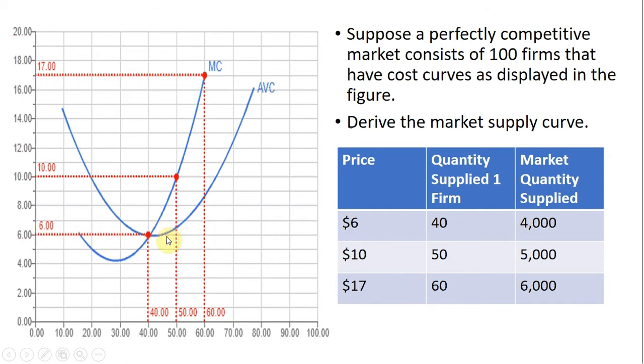So at a price of $6, this competitive firm would bring 40 units to the market. At a price of $10, this competitive firm would bring 50 units to the market. At a price of $17 per unit, this competitive firm brings 60 units to the market.